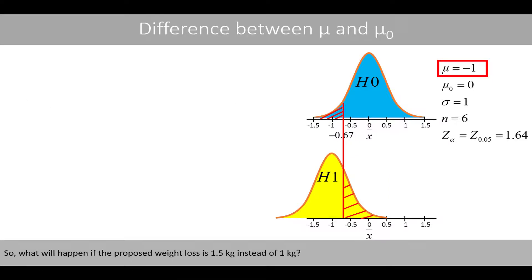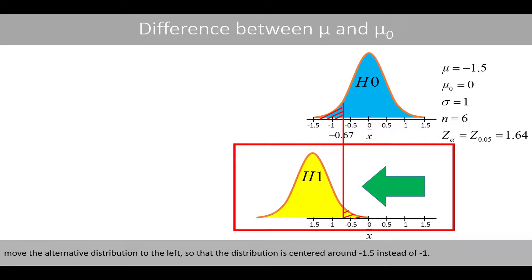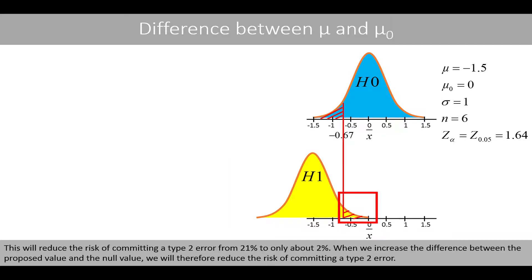So what will happen if the proposed weight loss is 1.5 kilos instead of 1 kilo? Then the difference between the mean values will be 1.5 instead of 1, which will move the alternative distribution to the left so that it is centered around negative 1.5 instead of negative 1. This will reduce the risk of committing a type 2 error from 21% to only about 2%. When we increase the difference between the proposed value and the null value, we therefore reduce the risk of committing a type 2 error.